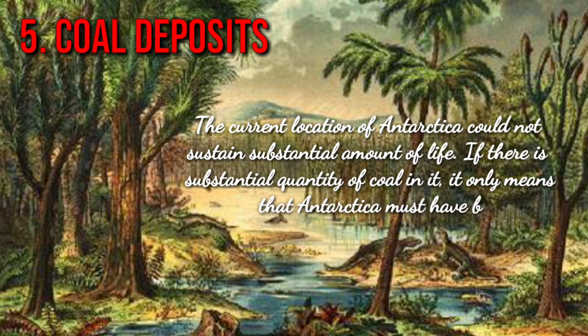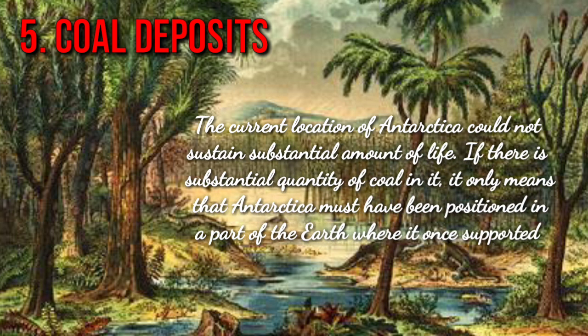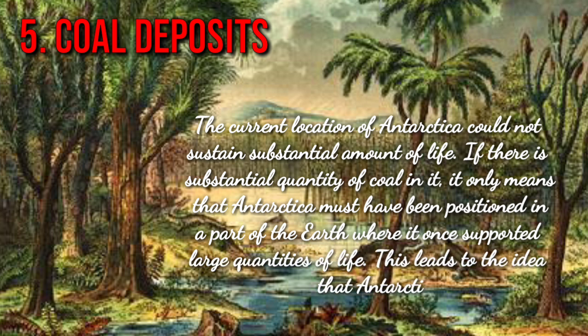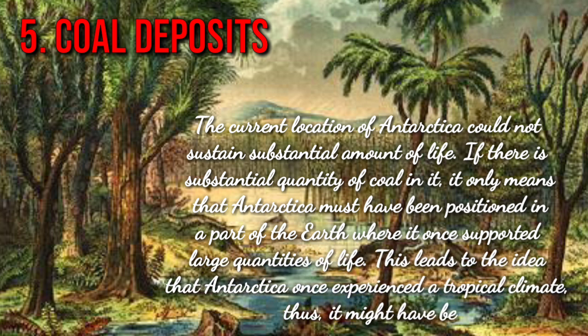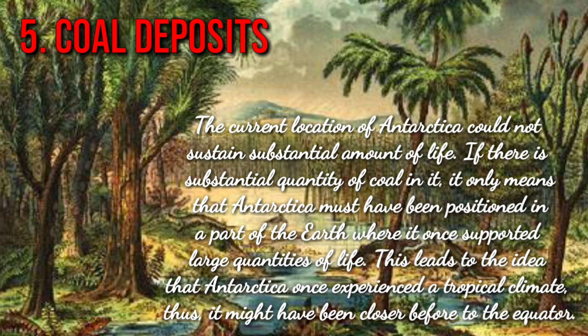The current location of Antarctica could not sustain a substantial amount of life. If there is a substantial quantity of coal found there, it only means that Antarctica must have once been positioned in a part of the earth where it supported large quantities of life. This leads to the idea that Antarctica once experienced a tropical climate, and thus might have been much closer to the equator before.